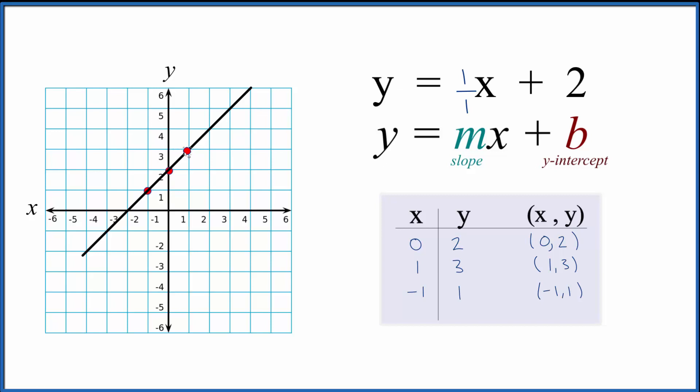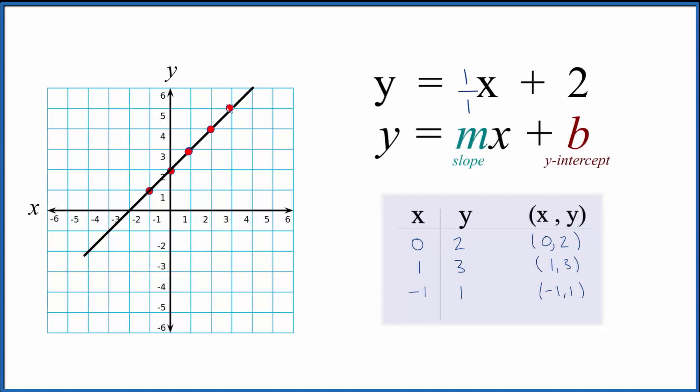We can rise 1 and run over 1. There's our next point right on the line. Let's do one more rise run, so you can see they all fall on the line as well.